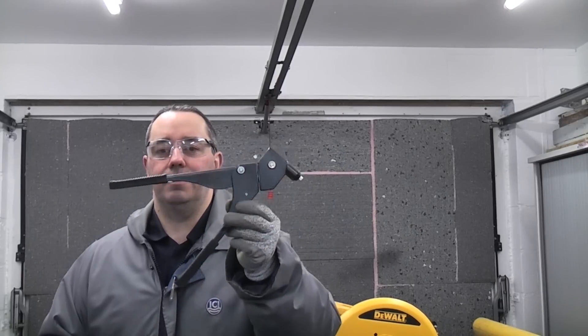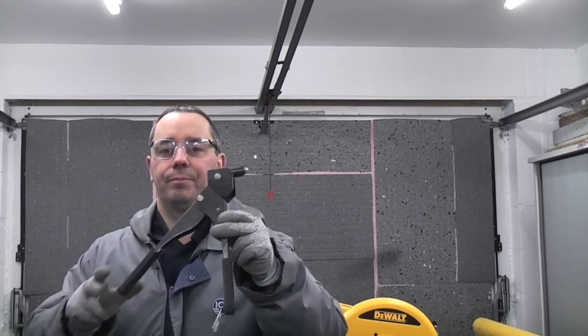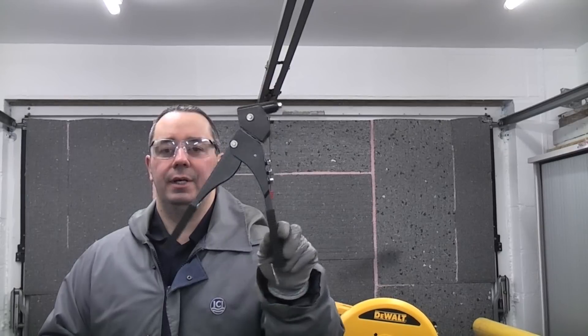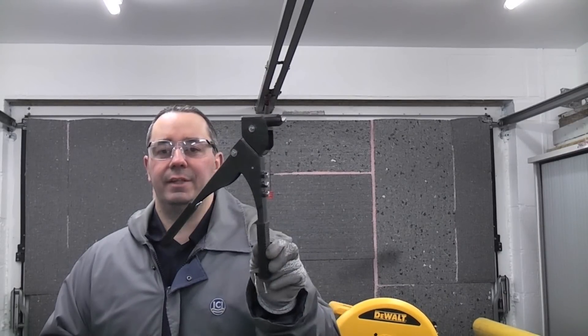Blind rivets are an extremely good way of fixing two thin pieces of metal together. In order to use them you will need a blind rivet gun like this. These are also referred to as pop rivet guns after the original firm that invented them.